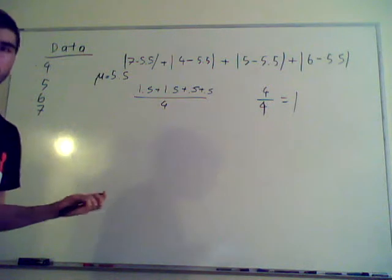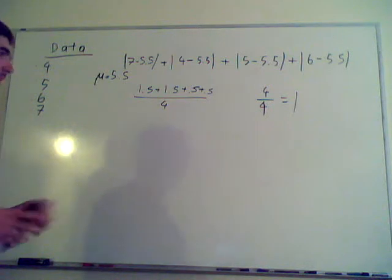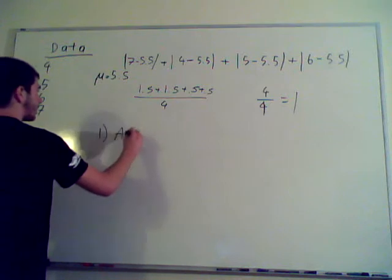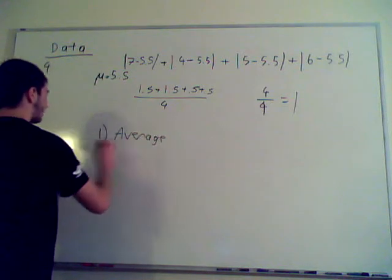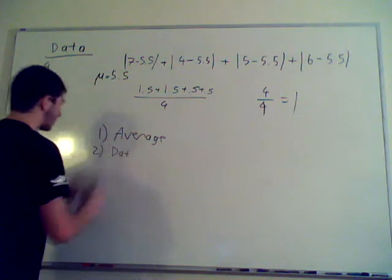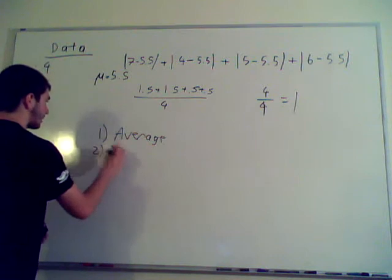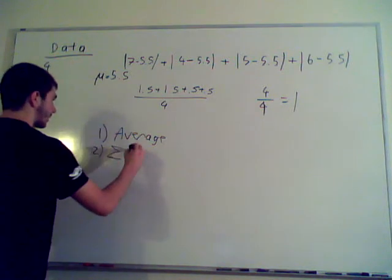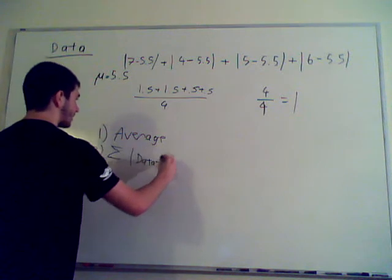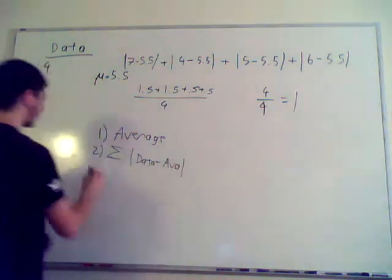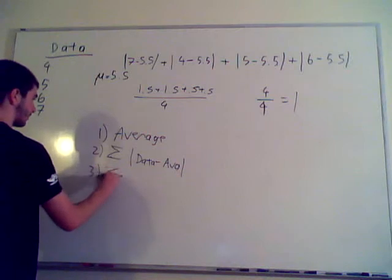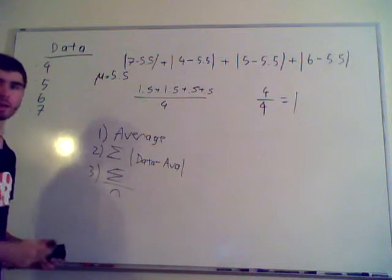So, if you have any trouble, I hope you don't. Yeah. Here, let me make a point-by-point guide. Average, sum, absolute value of data minus average, and three, sum divided by numbers. Alright?